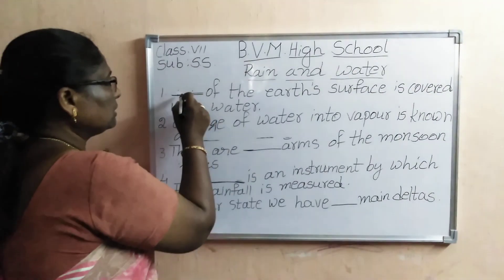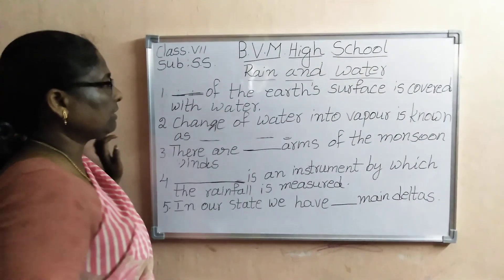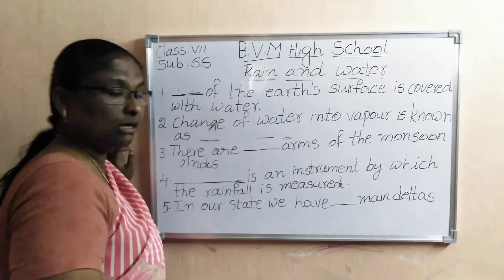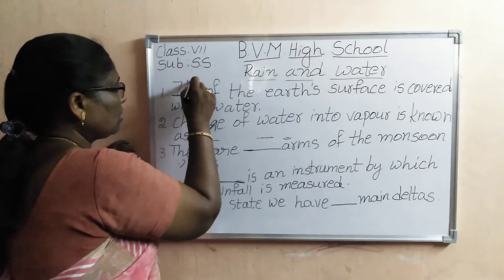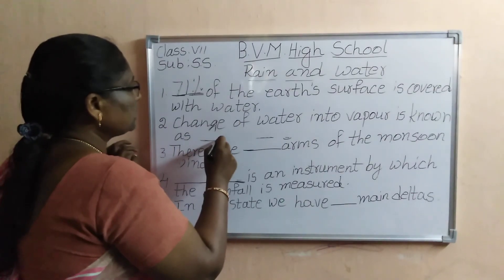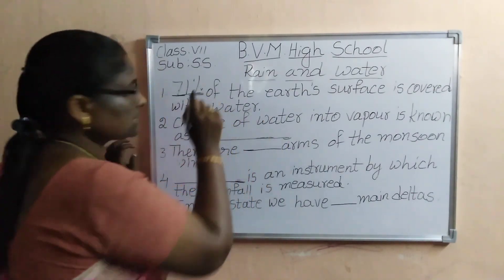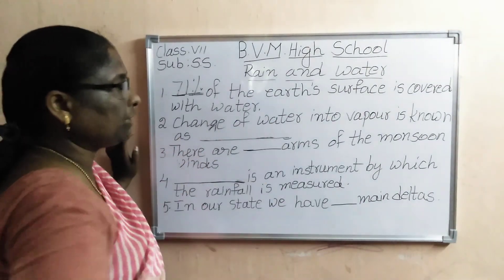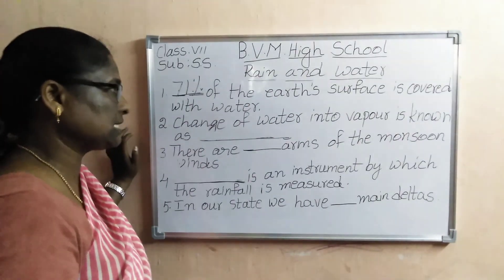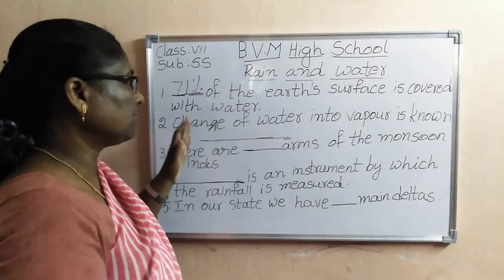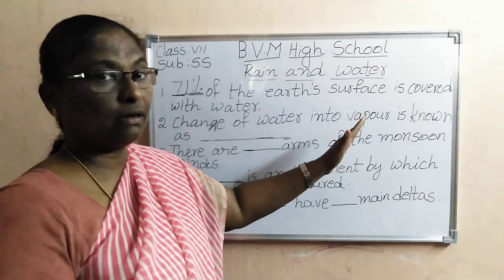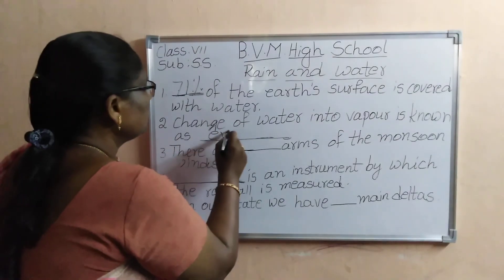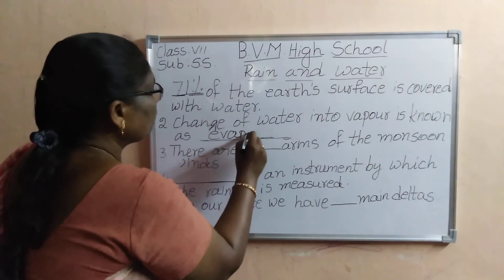So first one: dash of the earth surface is covered with water. How much percentage of water is there? That is 71%. And second one: the change of water into vapor is known as dash. The water changing into vapor is known as evaporation.